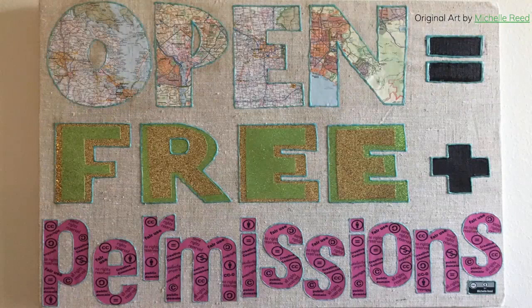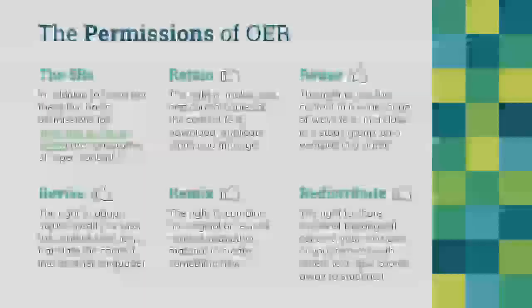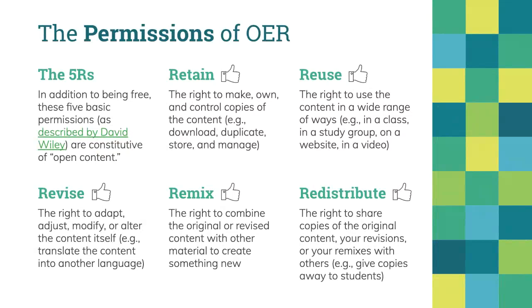That means that if we want to know whether content is truly open, we first have to ask: is it free? And does it grant other people certain permissions? Usually when we talk about the permissions of OER, we're talking about the five R's as David Wiley called them: the permission to retain, to reuse, to revise, to remix, and to redistribute.